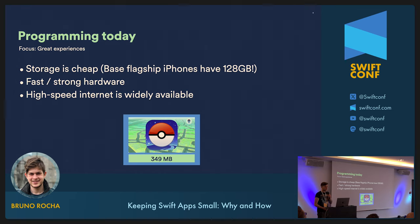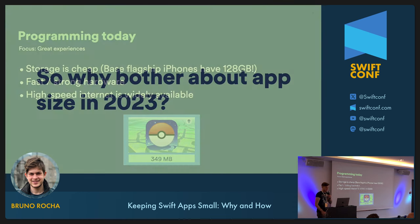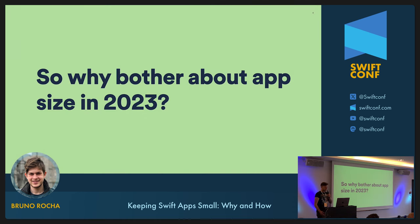Fast internet is so widespread nowadays that even cellular connections can be just as fast as your local Wi-Fi. Storage has also gotten cheap enough that the minimum storage on a flagship iPhone is now 128 gigabytes — a lot. Not long ago, this was 16 gigabytes on the iPhone 6. So why do companies like Spotify care about this? What difference does it make if an app gets a couple of megabytes smaller?